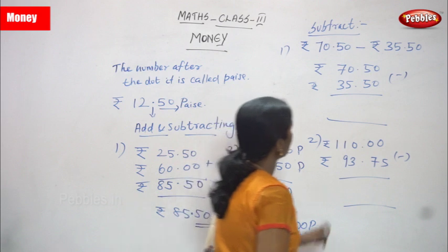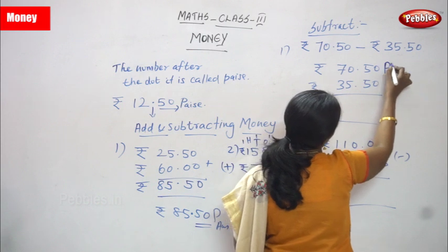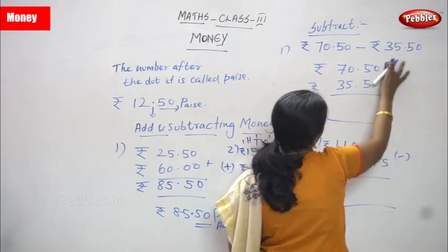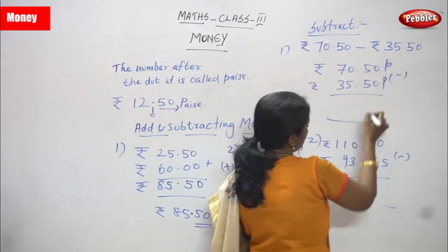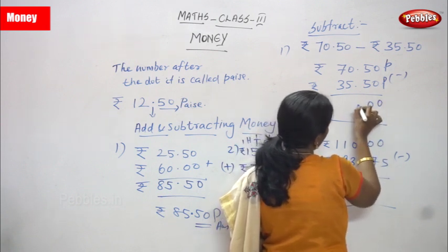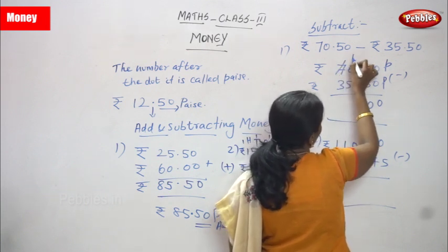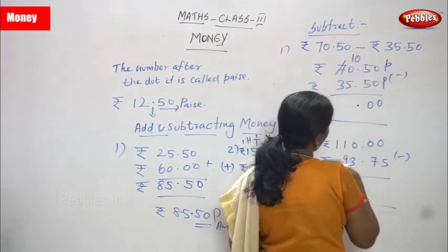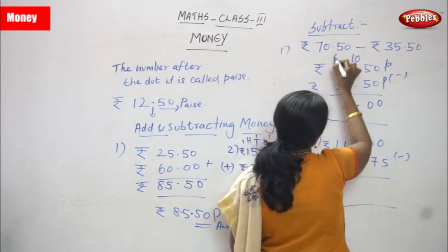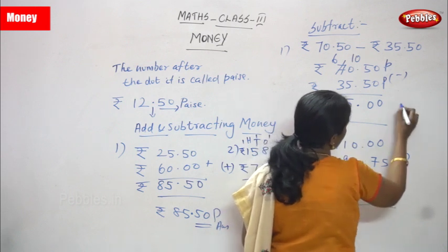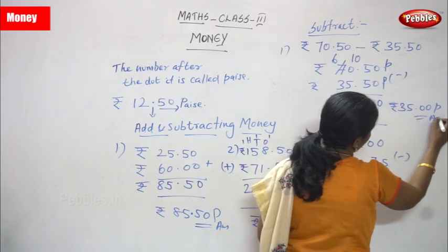Next, subtraction. 70 rupees 50 paise minus 35 rupees. 0 minus 0 is 0, 5 minus 5 is 0, then put the dot. 0 minus 5 is not enough to subtract, so you have to borrow from 7 — this 0 becomes 10. 10 minus 5 using backward counting gives 5. It becomes 6, then 6 minus 3 is 3. So the answer is 35 rupees 50 paise.